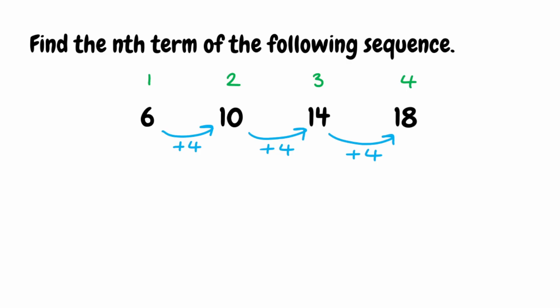Because we have a common difference, we know we have a linear sequence. To find the nth term, the difference between the terms is going to be the value that comes before n. We know from term to term we're adding 4, so it's positive 4, meaning the beginning of our nth term is 4n.